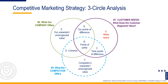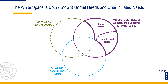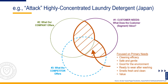Finally, Area G is the white space — customer needs not being met by you or by the competitor. The white space consists of two types of needs: unmet needs that are known, which are unmet for reasons including your ability to satisfy them profitably; and unarticulated needs, which are needs customers do not readily mention or coherently express. It can be difficult to find anything that goes in the white space, as there is typically a bias towards thinking you have a complete understanding of all the customer's needs.